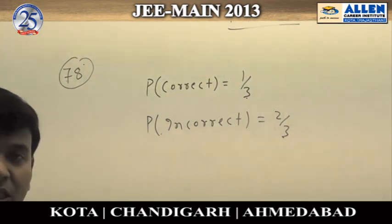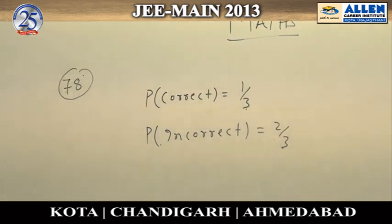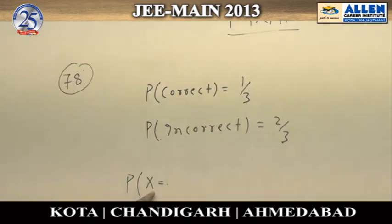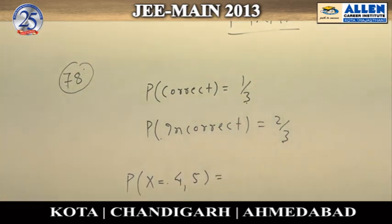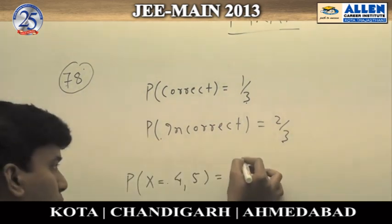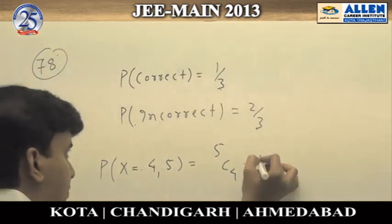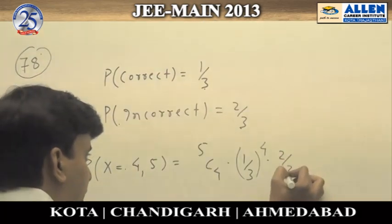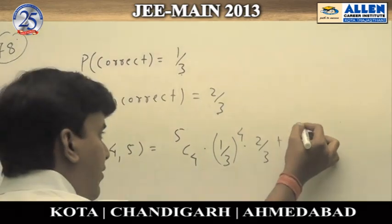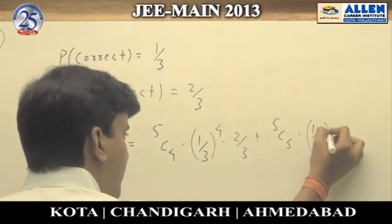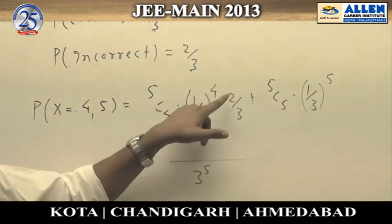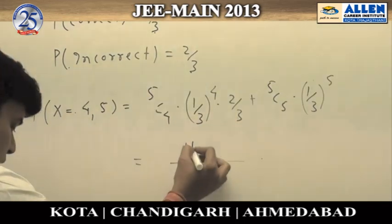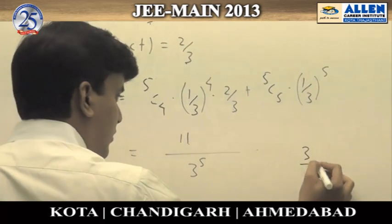We have to find the probability that the student gets four or more correct answers. Let X denote the number of successes. For four successes: 5C4 × (1/3)^4 × (2/3)^1, plus for five successes: 5C5 × (1/3)^5. Simplifying, we get 3 raised to power 5 in the denominator, and 5×2 + 1 = 11 in the numerator. The correct answer is option 3.